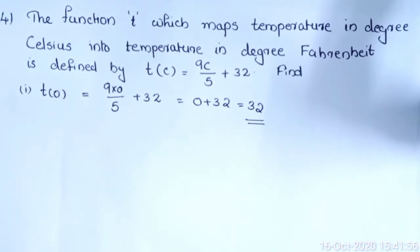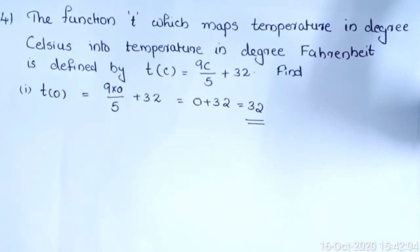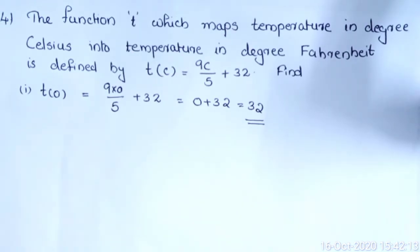We want to find out particular values of that function. First: find T(0). Put C = 0. We get 9×0/5 + 32 = 0 + 32 = 32. So T(0) = 32.